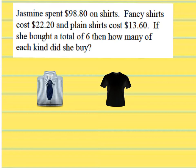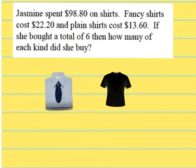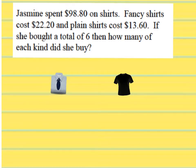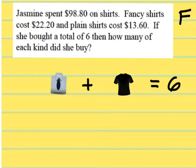Jasmine spent $98.80 on shirts. Fancy shirts cost $22.20 and plain shirts cost $13.60. If she bought a total of 6, then how many of each kind did she buy? We have a fancy shirt and a plain shirt. How many shirts did she buy total? She bought 6 shirts. Which means if I add the number of fancy shirts and the number of plain shirts, she will have 6. We'll use F for fancy and P for plain.